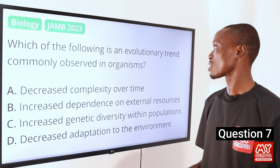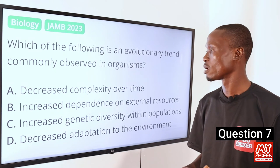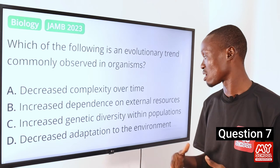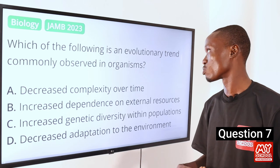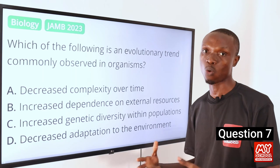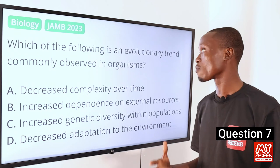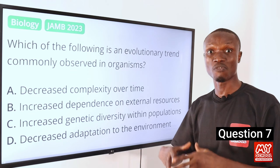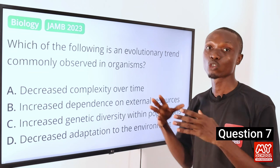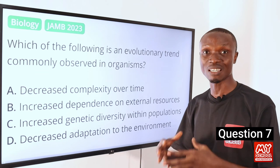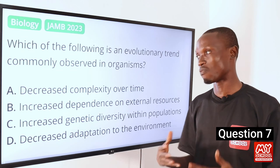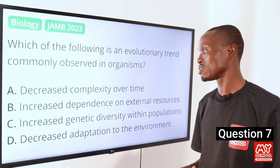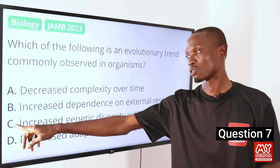Question 7. Which of the following is an evolutionary trend commonly observed in organisms? A, decreased complexity over time. B, increased dependence on external resources. C, increased genetic diversity within population. D, decreased adaptation to the environment. Evolutionary trends are changes that occur within a population or species over time, including adaptation to the environment, decreased vestigial structures, increased size, increased genetic diversity, and specialization. The correct answer is option C, increased genetic diversity within population.